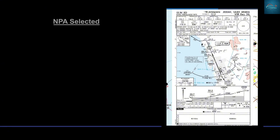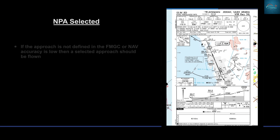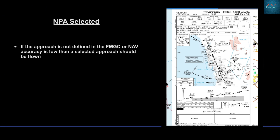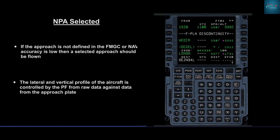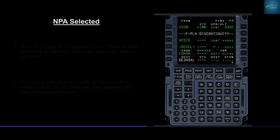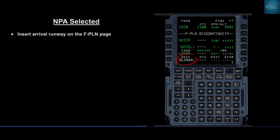Non-precision approach selected — NPA selected. If the approach is not defined in the FMGC or nav accuracy is low, then a selected approach should be flown. The lateral and vertical profile of the aircraft is controlled by the pilot flying from raw data against data from the approach plate.